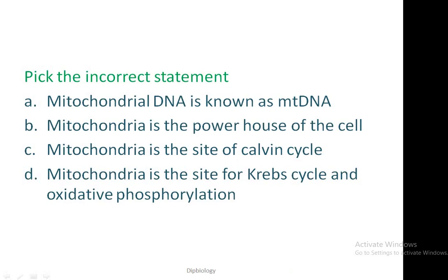Next question: Pick the incorrect statement. Number one: mitochondrial DNA is known as mt-DNA — this is correct. Number two: mitochondria is the powerhouse of the cell — this is also correct. Number three: mitochondria is the site of the Calvin cycle — this is not correct. Number four: mitochondria is the site for the Krebs cycle and oxidative phosphorylation — this is also correct. So the incorrect statement is C: mitochondria is the site of the Calvin cycle. In this way you can solve MCQ-type questions and revise your lessons. Thank you for listening.